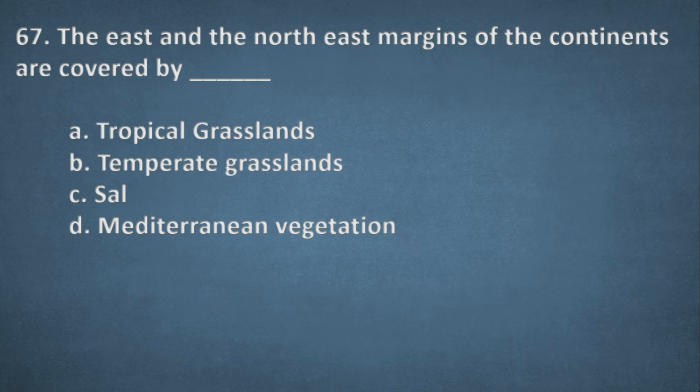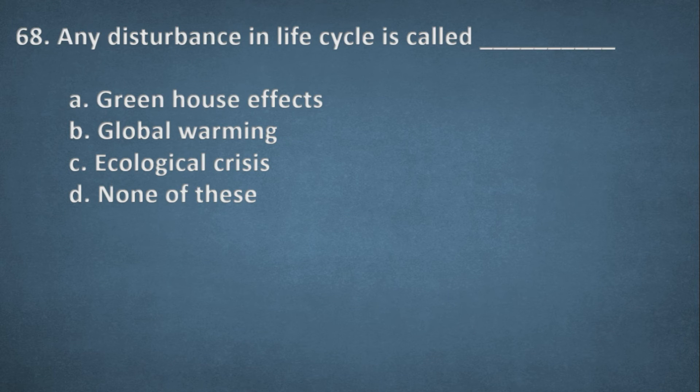Next one. The east and the northeast margins of the continents are covered by. Options: Tropical grasslands, Temperate grasslands, Sal, Mediterranean vegetation. The right option, D, Mediterranean vegetation. Next one. Any disturbance in life cycle is called. Options: Greenhouse effects, Global warming, Ecological crisis, None of these. The right option, D, Ecological crisis.